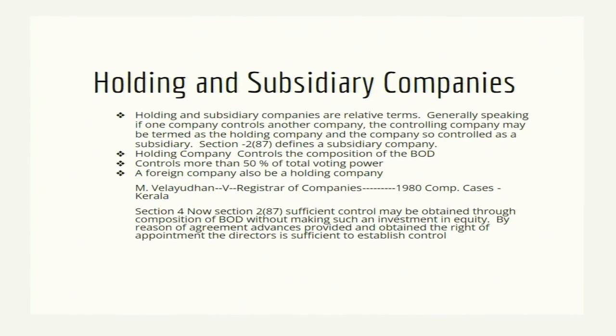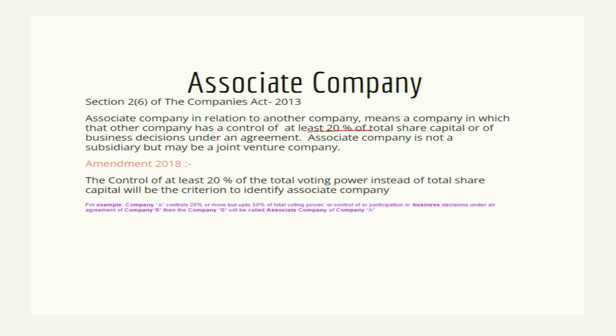Holding and subsidiary companies: if any company has control over another company, this company is known as the holding company, and the company being held is known as the subsidiary company. Their status is considered from the status of the holding company. An associate company is a company where at least 20 percent but not more than 50 percent of shares are in the hands of another company — this company is known as an associate company. The trigger point is 20 to 50 percent.